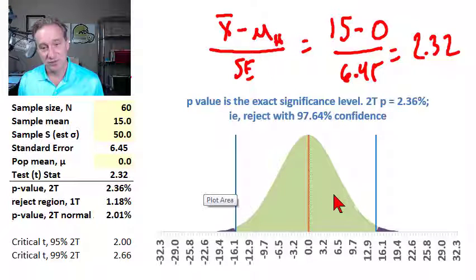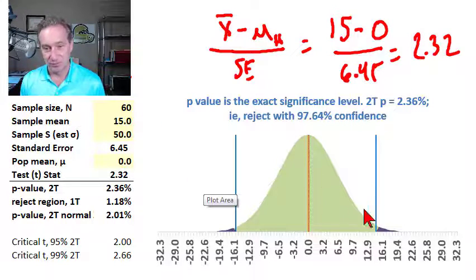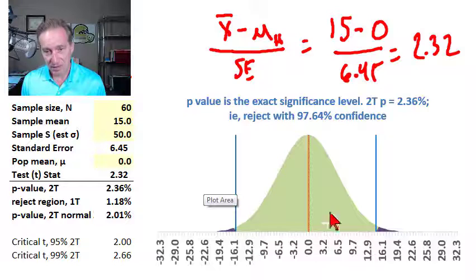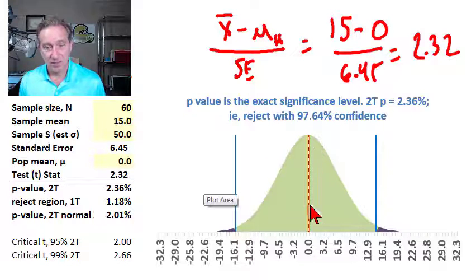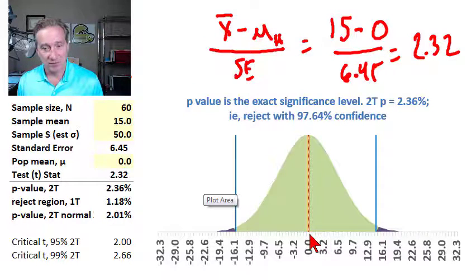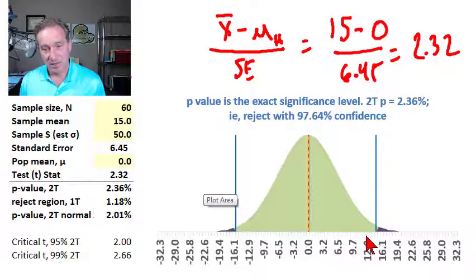And when the sample is greater than 30, we can use the normal. Okay, so here we have the null hypothesis of zero, and then here we have the observed value, the sample mean of 15.